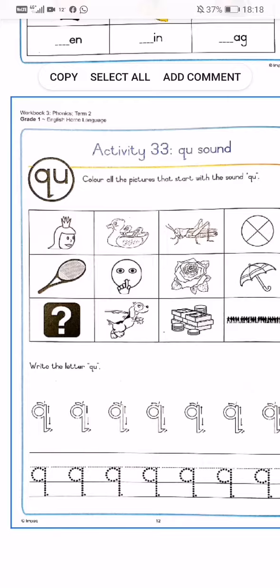Grasshopper, no. Quarters, yes. Racket, no. Quiet, yes.